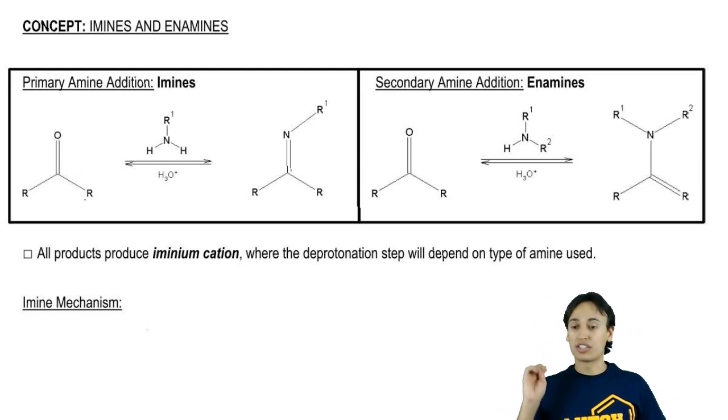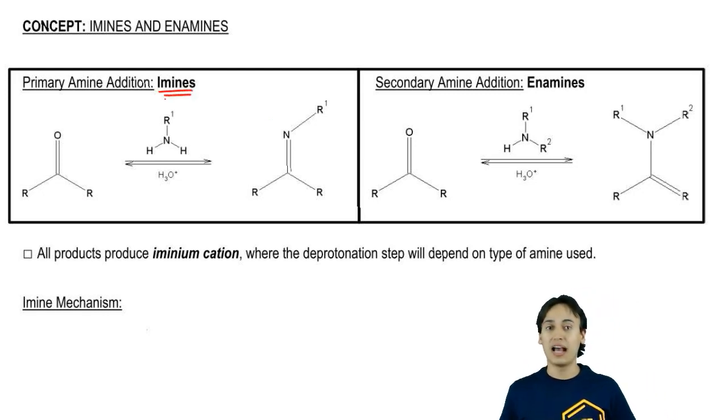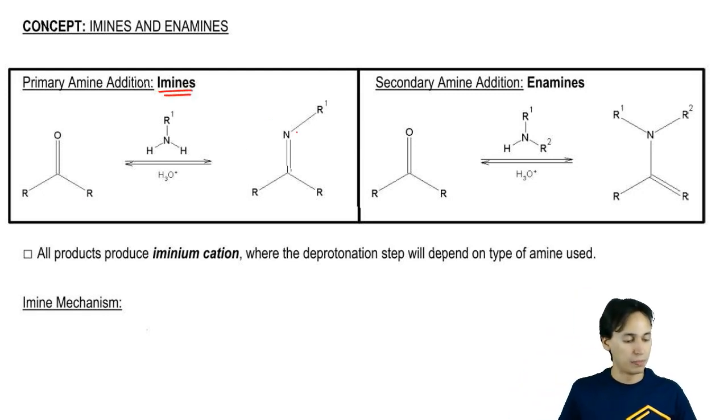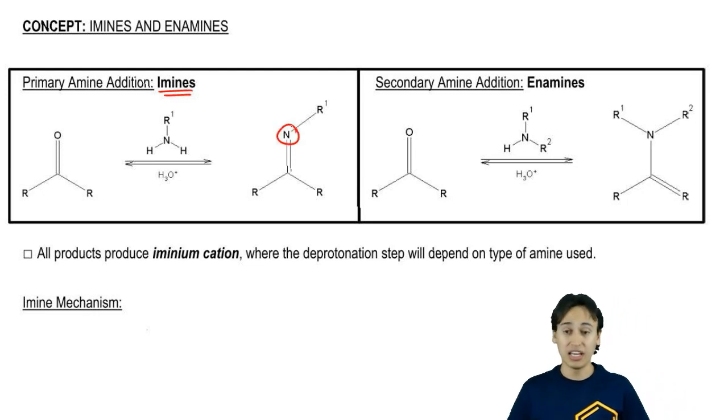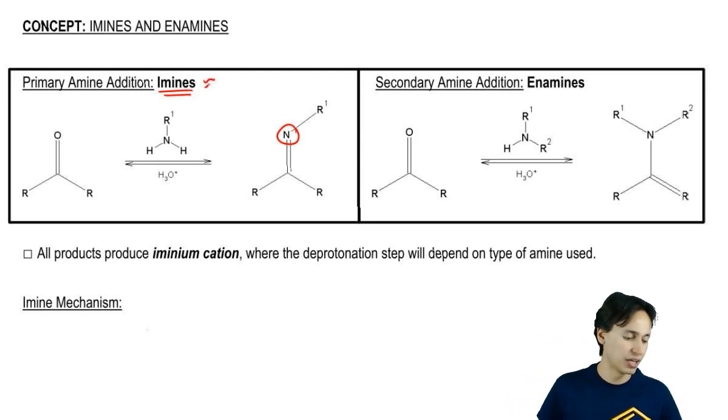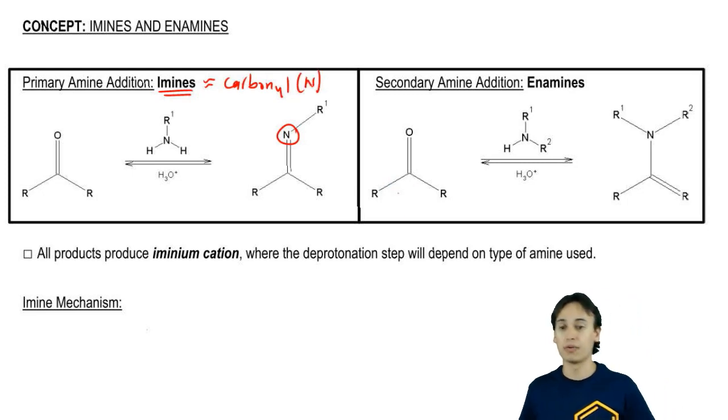As you can see, when you react a carbonyl with primary amine, you're going to get an imine. An imine has a functional group of basically a nitrogen with a double bond on it and possibly an R group on the top. Think about an imine as kind of like a carbonyl but with a nitrogen. If it would have been a carbonyl with an oxygen, that's an imine with a nitrogen on it.